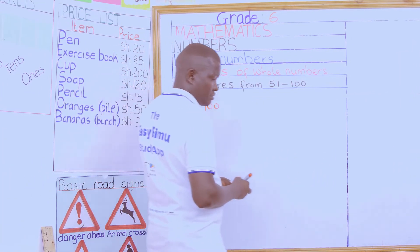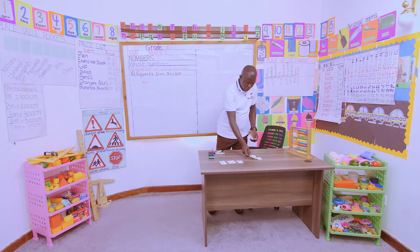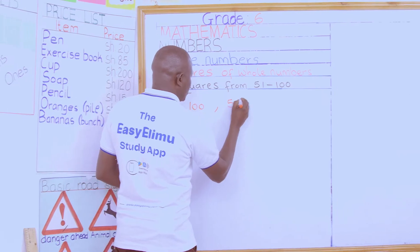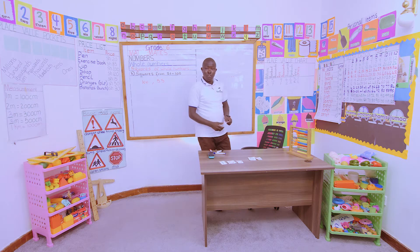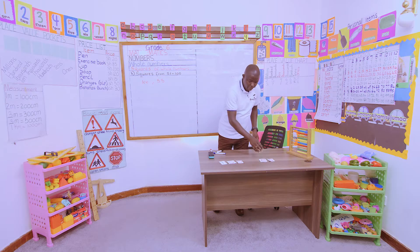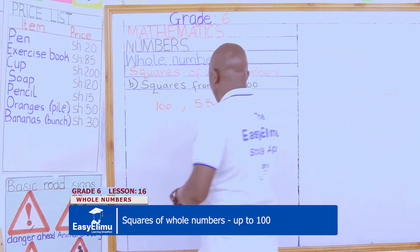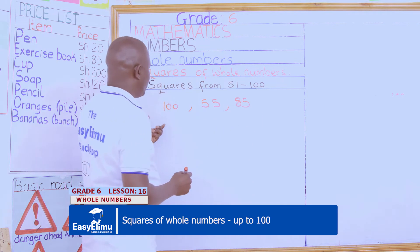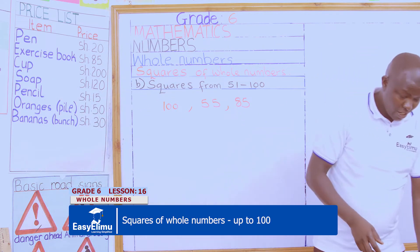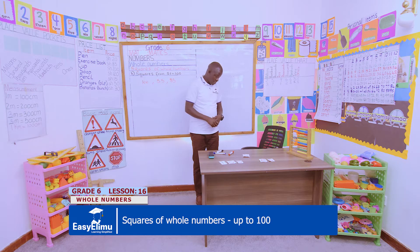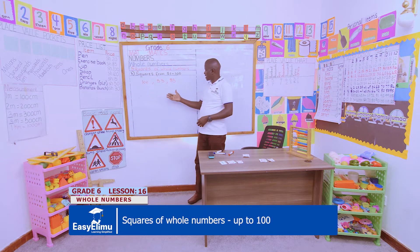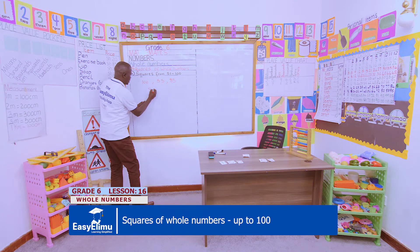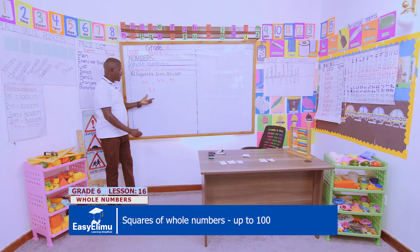Using the number cards, you can form numbers like 55 and 85 — these are numbers between 51 and 100. Let us try looking for the squares of these numbers. To start, let's randomly pick a number, for example 85.